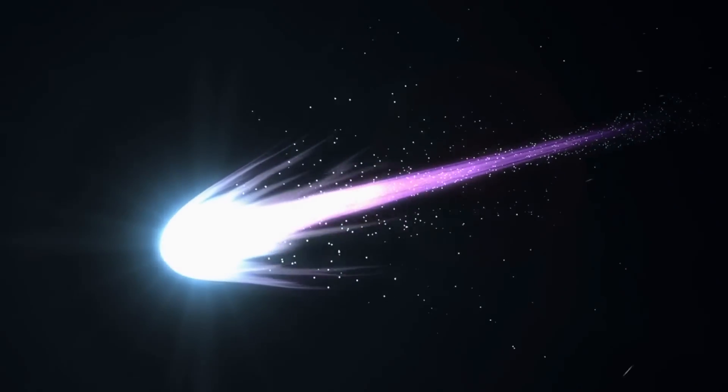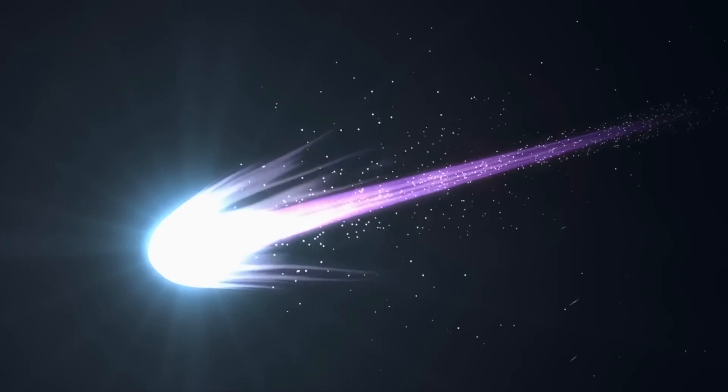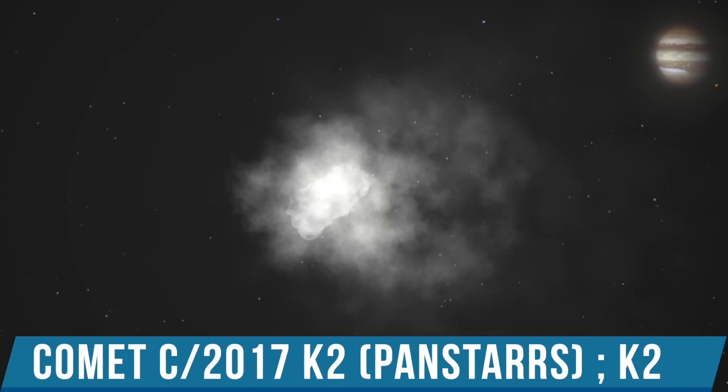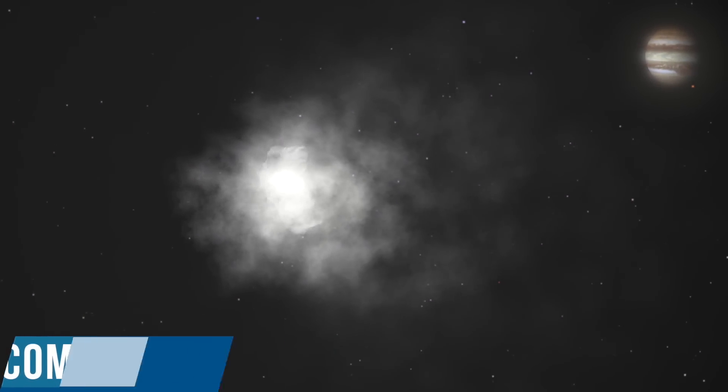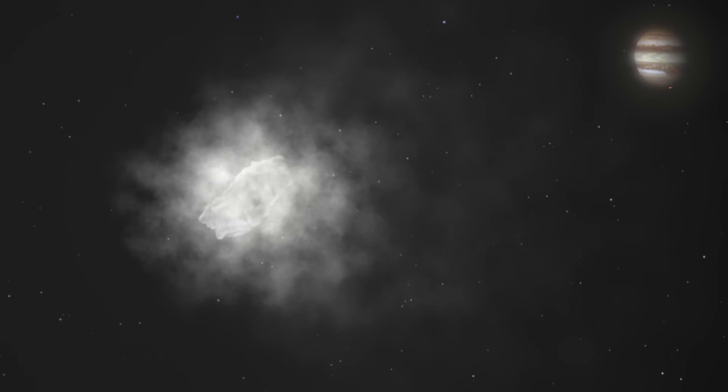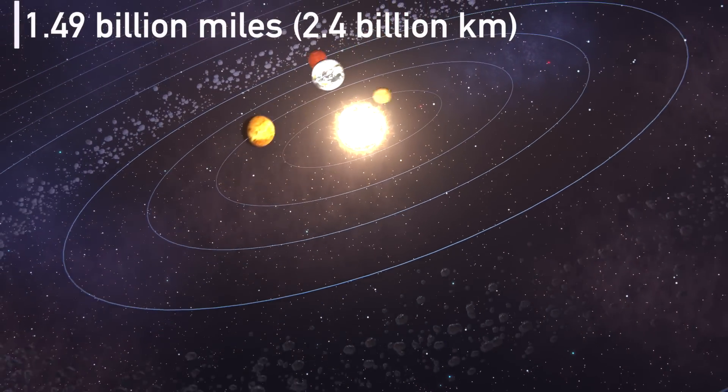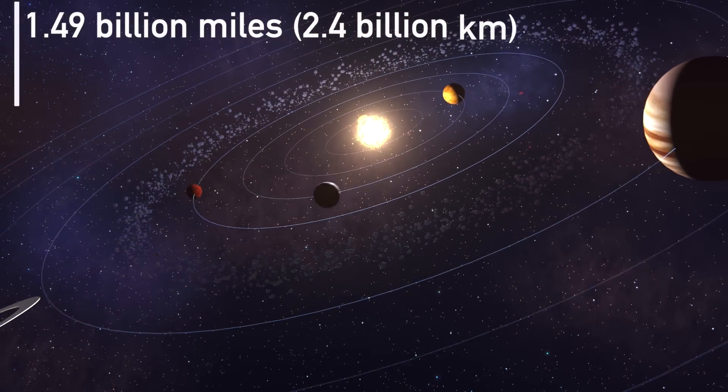If you haven't seen any comet in your life, do not miss this amazing event. The comet dubbed Comet C/2017 K2 PanSTARRS, called K2 for short, was discovered when it was hiding somewhere between Saturn and Uranus, about 1.49 billion miles or 2.4 billion kilometers from the sun.